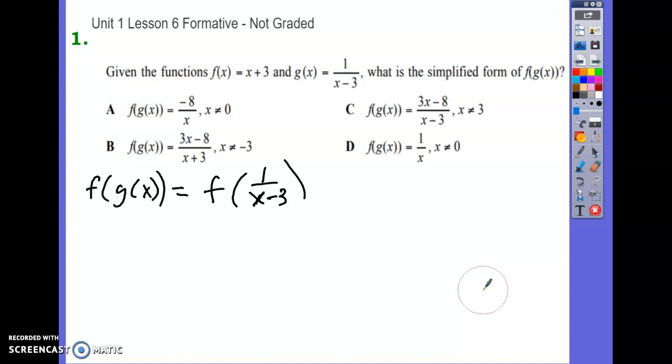So given those two functions, what is a simplified form of f of g of x? So we are going to substitute in one over x plus three into f of x for g of x. Okay, so I first rewrote that, and now we are going to substitute in one over x minus three everywhere we see x into f of x.